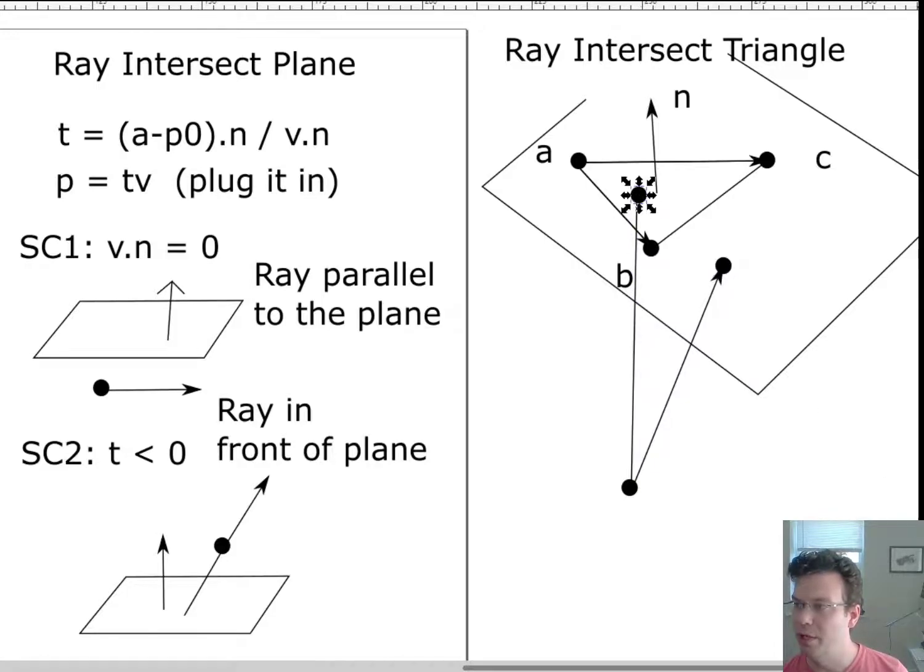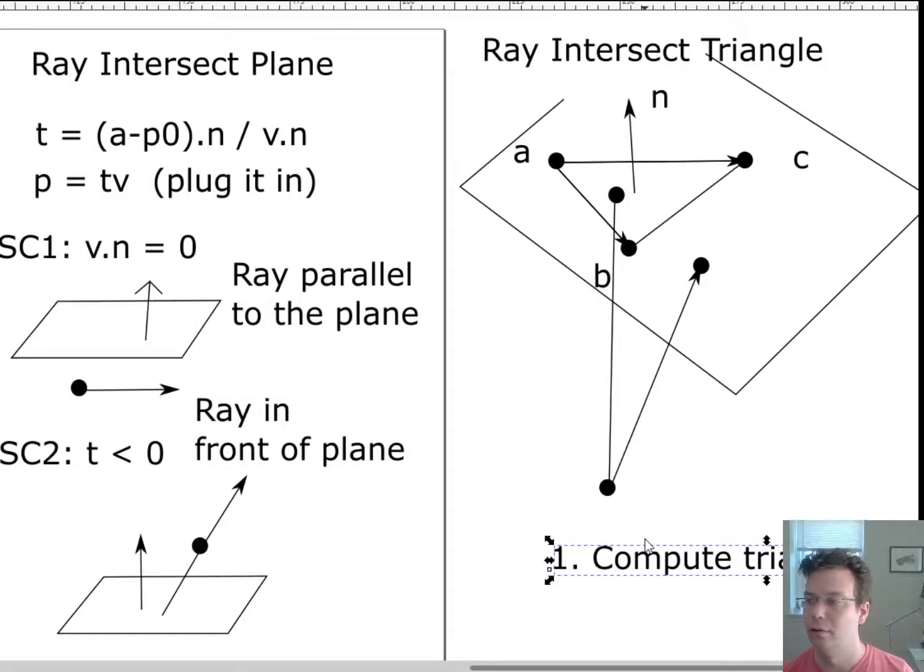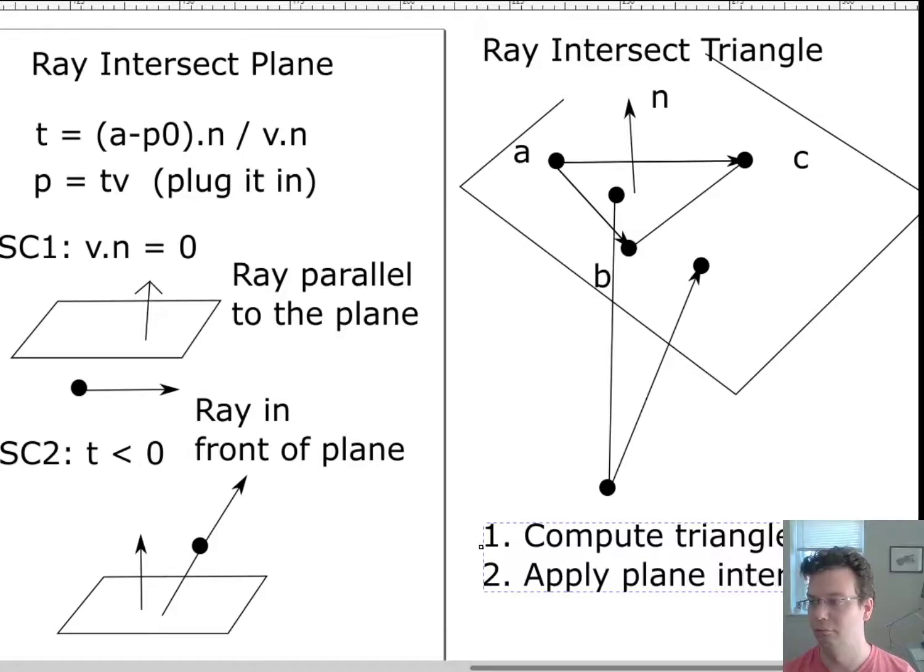So there's just one more step we have to do. Step one: compute triangle normal. Step two: apply plane intersection. Step three: make sure that intersection point is within the triangle.